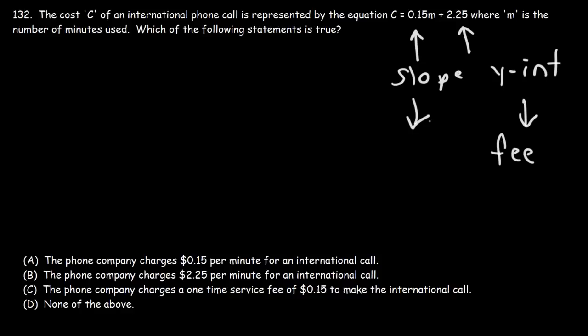There are two elements to this equation: the slope and the y-intercept. The y-intercept is a fixed number, so this would be the one-time service fee. The slope is multiplied by m. So the slope is going to be the amount that the company charges each minute that is used during the phone call. So that is the cost per minute. So knowing that, the cost per minute is 15 cents, because it's going to be multiplied by m, the number of minutes used. So A is the correct answer. The one-time service fee is $2.25. So clearly that's not C, and B doesn't match up with any of that. So A is the correct answer.